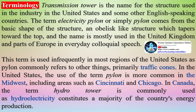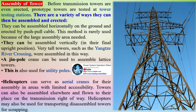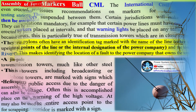Before transmission towers are erected, prototype towers are tested at tower testing stations. There are a variety of ways they can then be assembled and erected — for example, they can be assembled horizontally on the ground and erected by push-pull cable, though this method is rarely used because of the large assembly area needed.